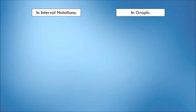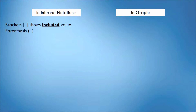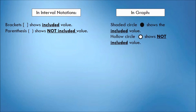To better understand interval notation, take note of the following symbols. In interval notation, brackets show that the value is included in the set, while parentheses show that the value is not included. In the graph, a shaded circle shows that the value is included, while a hollow circle shows that the value is not included.